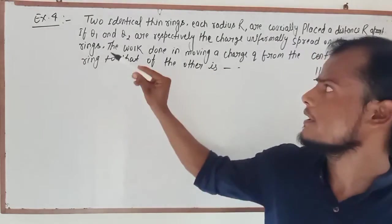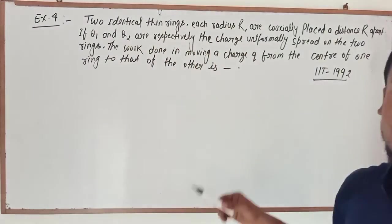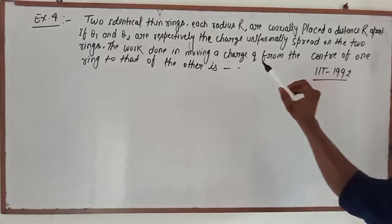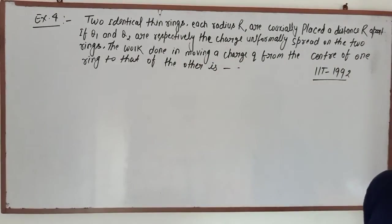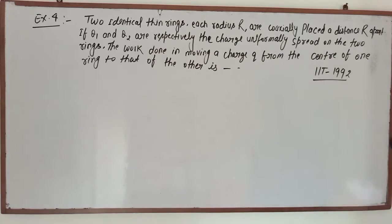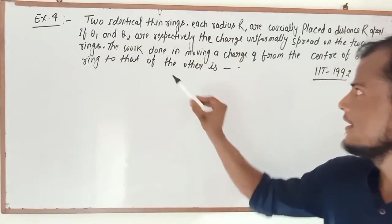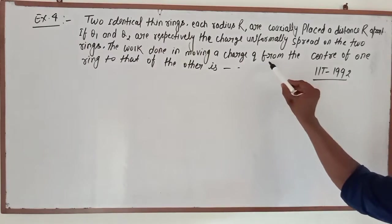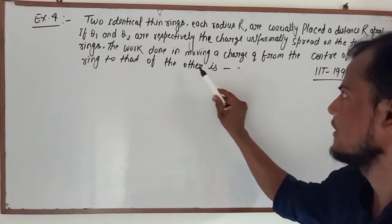The question is that two identical thin rings, each radius R, are placed a distance 2R apart. If Q1 and Q2 are respectively the charges uniformly spread on the two rings, find the work done in moving a charge of small q from the center of one ring to that of the other ring.